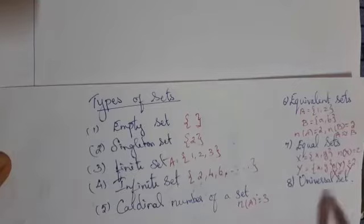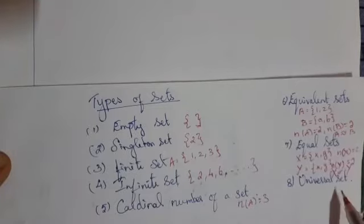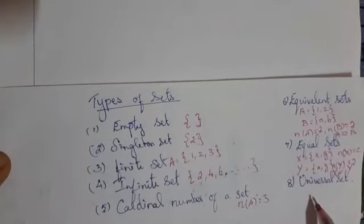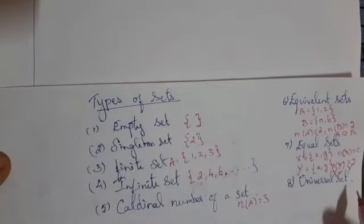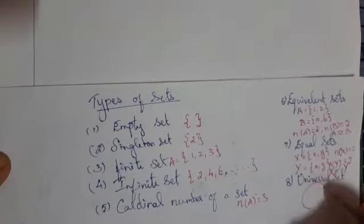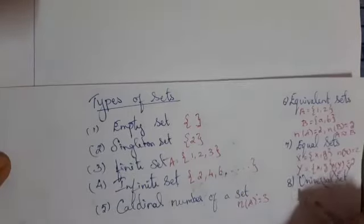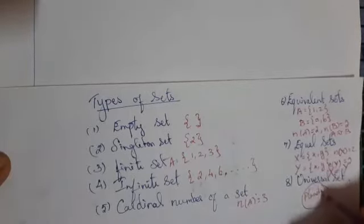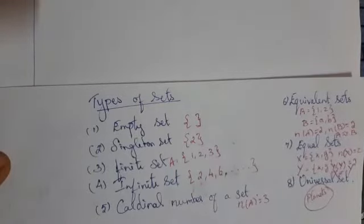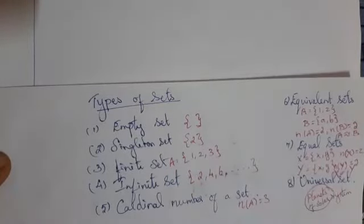Next, universal set. When you are ready to learn about Earth, Mars, Jupiter, etc., the universal set is the planets of the solar system. The universal set is the planets of the solar system.